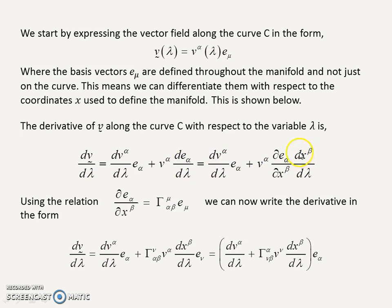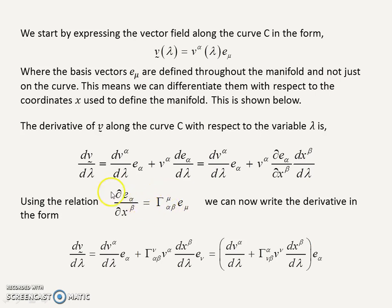We can use the chain rule to break down this last term. We recognize the partial derivative of the basis vector with respect to the coordinates x as being given by an expansion in terms of the basis vectors with constants — the affine connection or Christoffel symbols of the second kind, also called connection coefficients gamma. This is a basic, fundamental relationship for curved space, since basis vectors vary from point to point. It's a very important relationship to commit to memory — it's necessary.